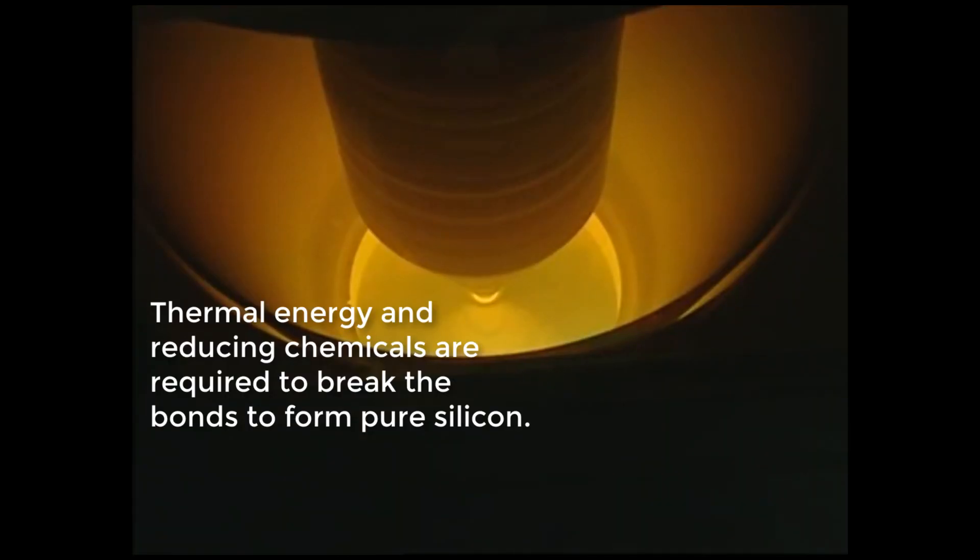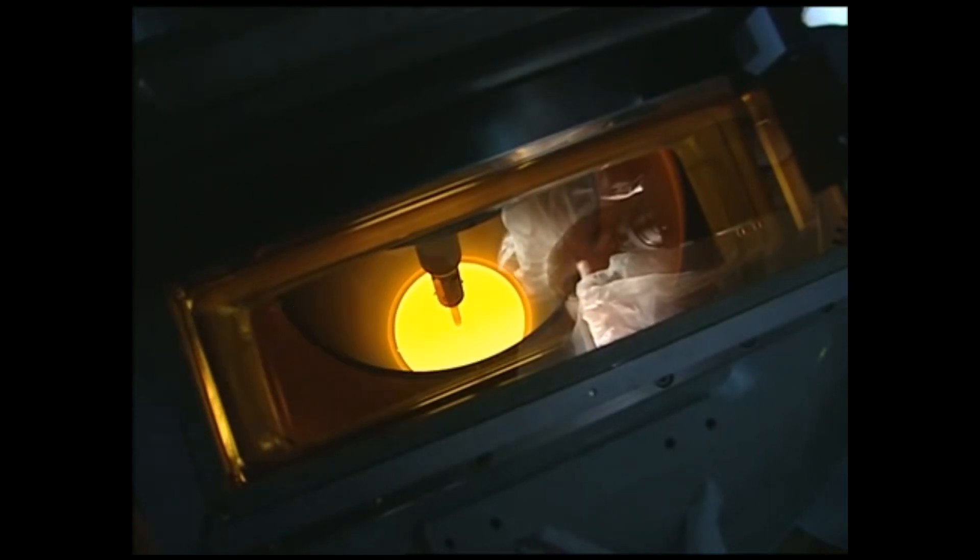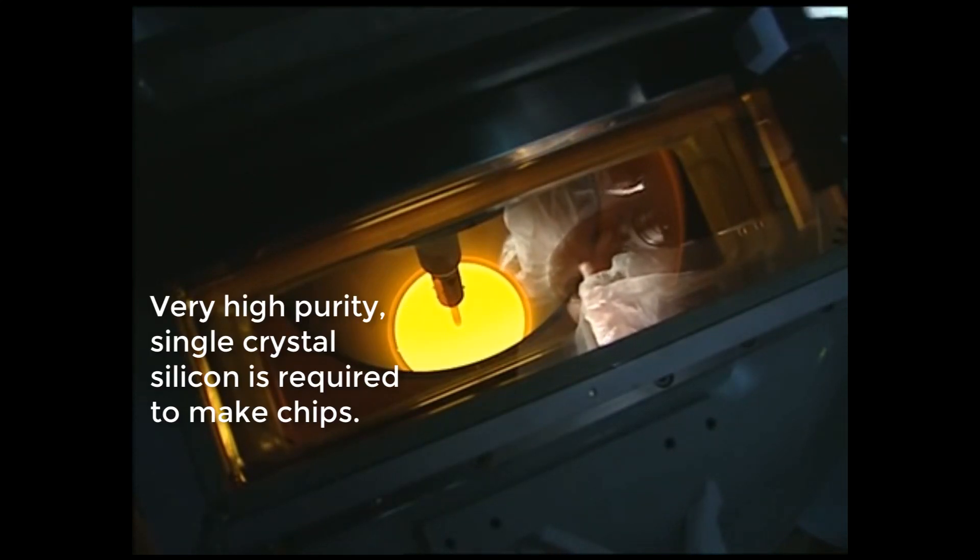Complicated chemical and physical processes are needed to convert silicon into a crystalline form and make sure the crystals meet all the requirements necessary for chip production.